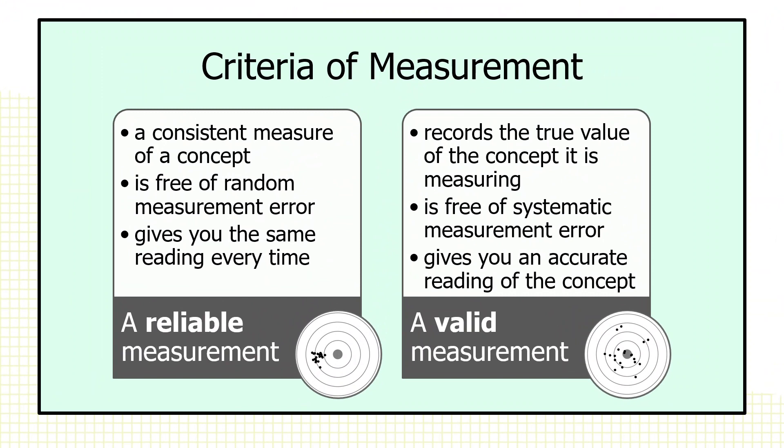A valid measurement — this is a tougher criterion — records the true value of the concept it's measuring. It's free of systematic measurement error. It gives you an accurate reading of the concept.